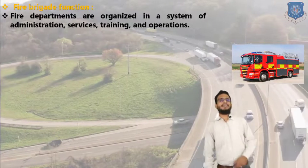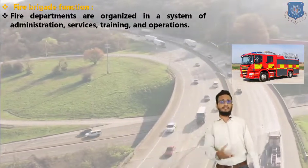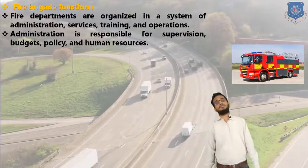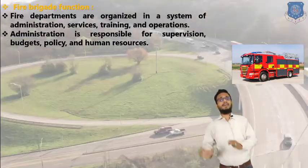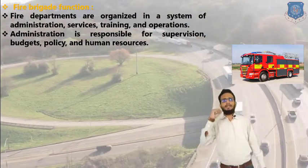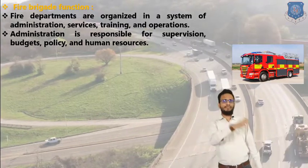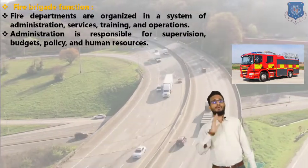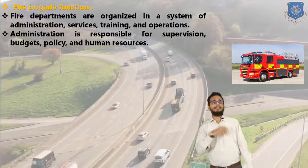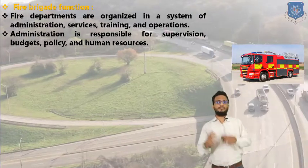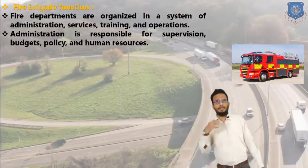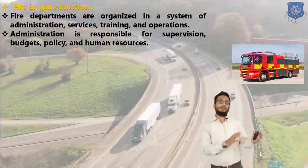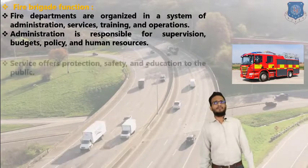Now let us discuss fire brigade functions. Fire departments are organized in a system of administration, services, training, and operations. Administration is responsible for supervision, budget, policy, and human resources. Administration is required in every system — ambulance management, fire brigade, GSRTC, public transportation, fleet systems. It is responsible for how many employees are required, what the budget is for a particular financial year, what the policies are, and also handles recruitment and promotion of employees.